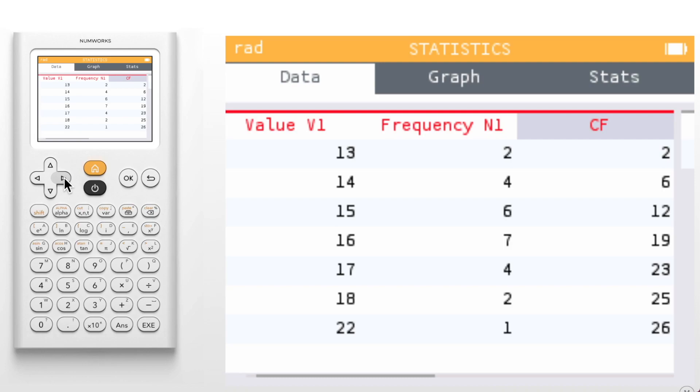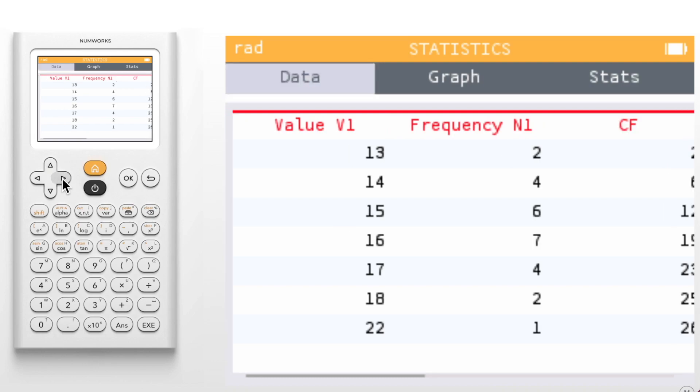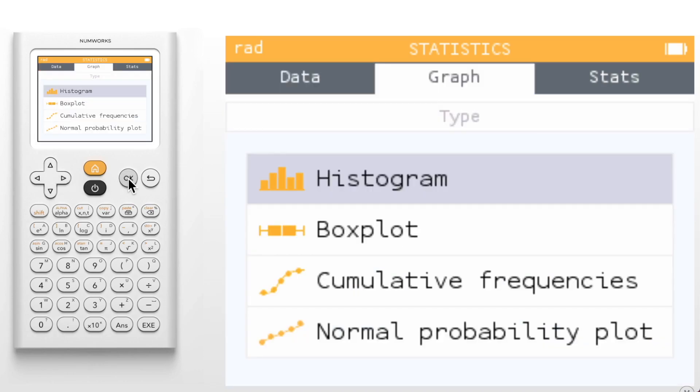Now let's take a look at some graphs. We can navigate up to the graph tab and click ok. Notice that we now have four graphical representations to choose from. Let's start with histograms.